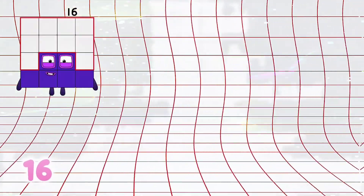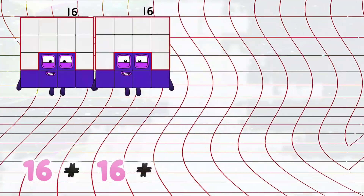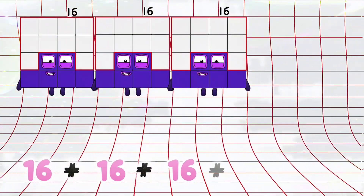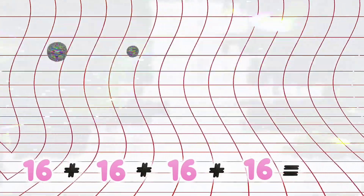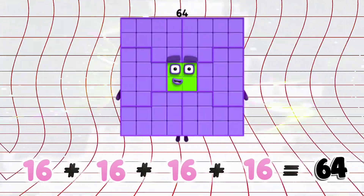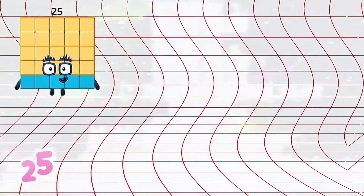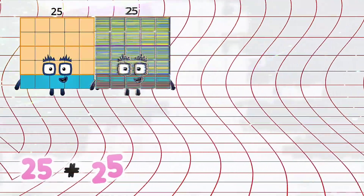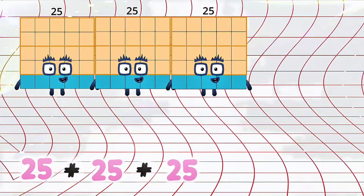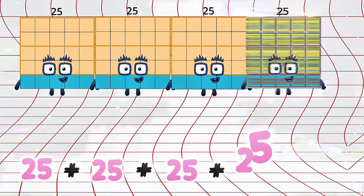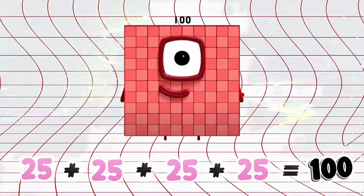16 plus 16 plus 16 plus 16 is equals to 64. 25 plus 25 plus 25 plus 25 is equals to 100.